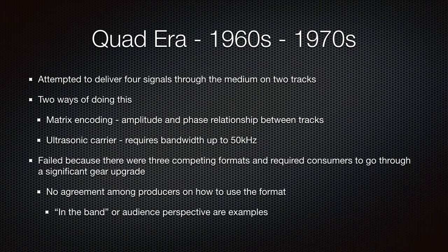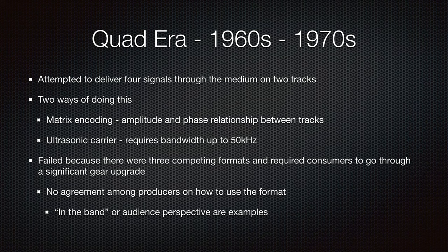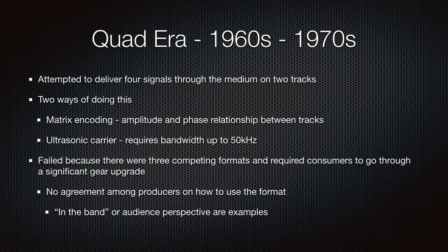The big brains in the labs were trying to figure out how to stuff more tracks into the same format. This could have been so cool, but again it's industry-driven with competing formats. The two main ways of doing this were matrix encoding — using amplitude and phase relationships between tracks to extract four channels out of two, which I still think is just genius — and an ultrasonic carrier, where you hide information above the hearing range in high-bandwidth vinyl and extract it back down. Very clever ways of doing this.